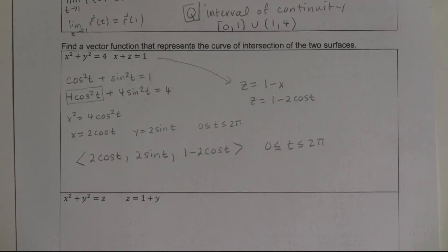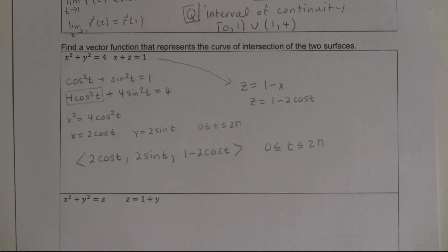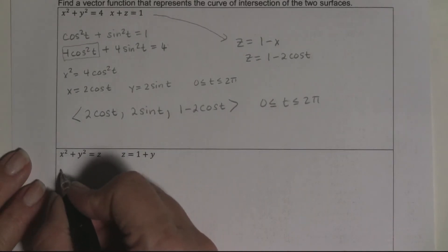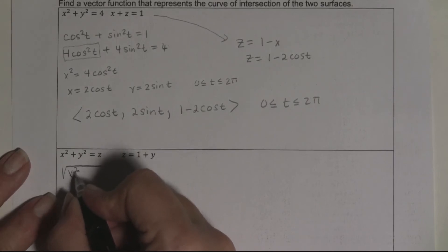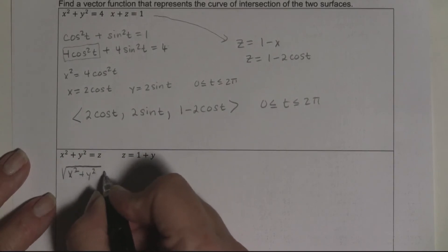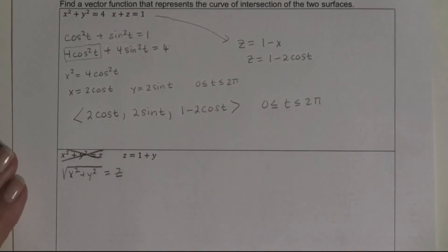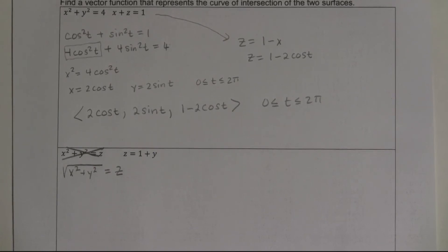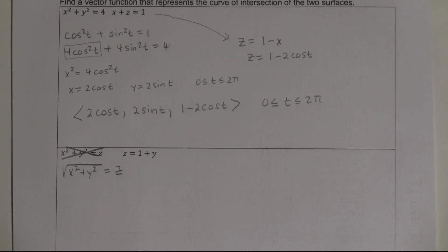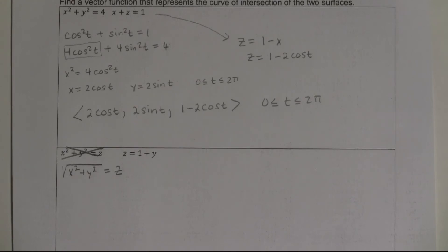There's a typo on page 5 — the equation should be x² + y² = z, not what was printed. Correcting it: we now have two surfaces, x² + y² = z and z = 1 + y. Substituting z = 1 + y into x² + y² = z gives x² + y² = 1 + y.